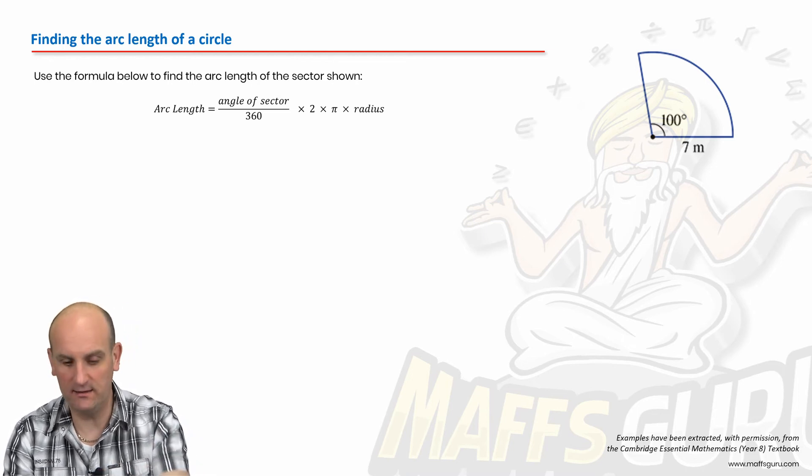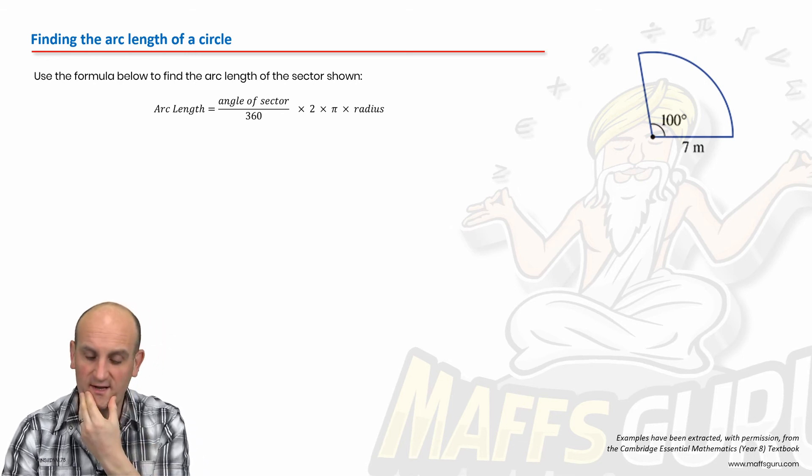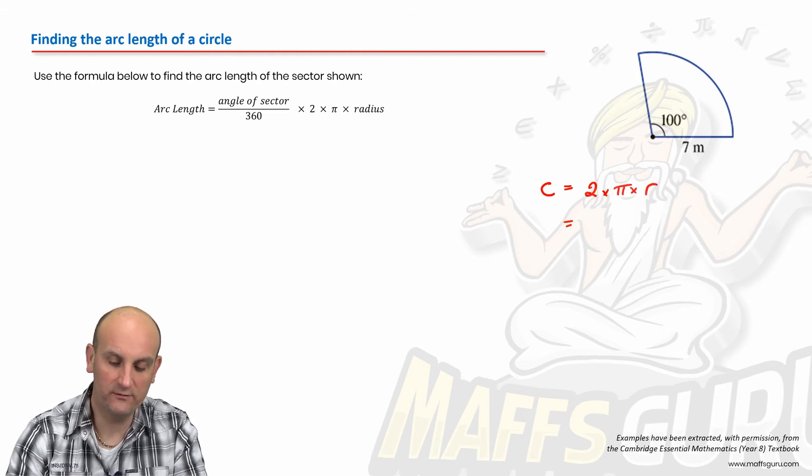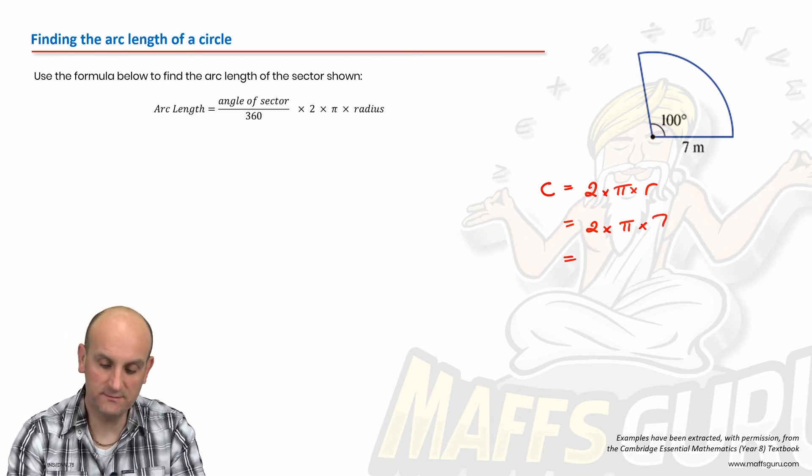All right. So let's put this all together to find the arc length of the sector shown. So let's do this again. Arc length of the sector shown. Do I have all the information I need? Yes. Well, we know the circumference of my whole circle is 2 times pi times radius, which is 2 times pi times 7. All I've done is formula, substitute because my radius is 7.